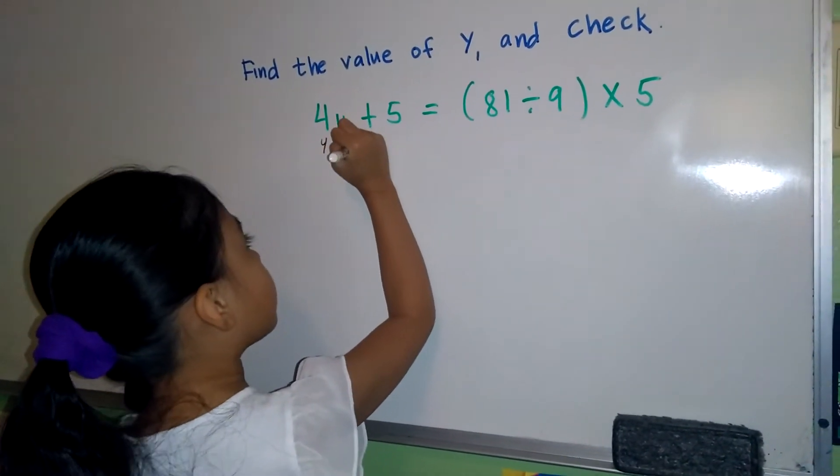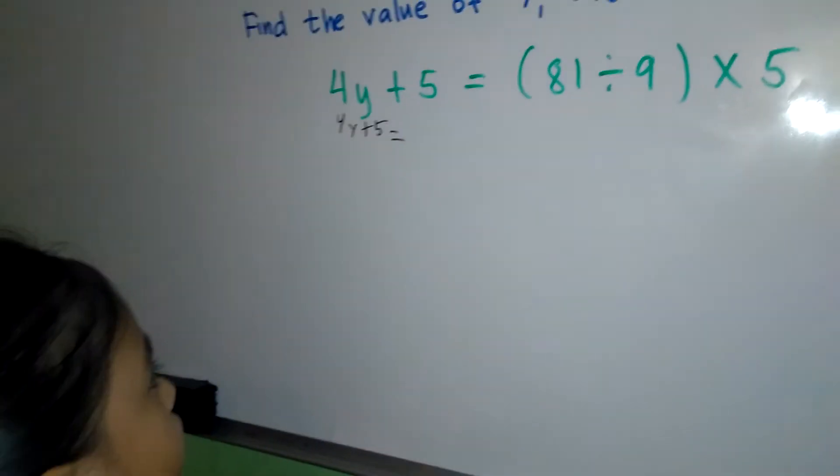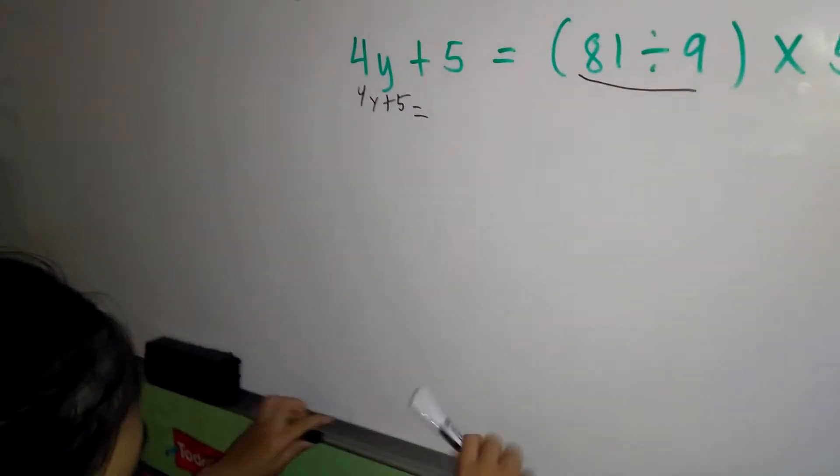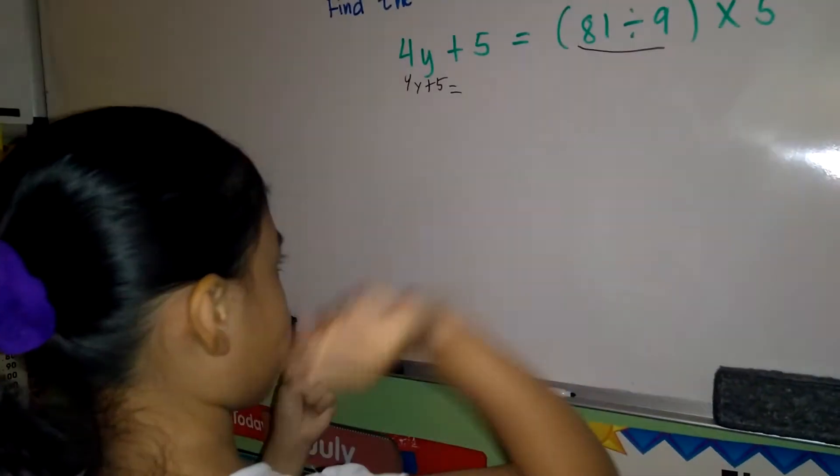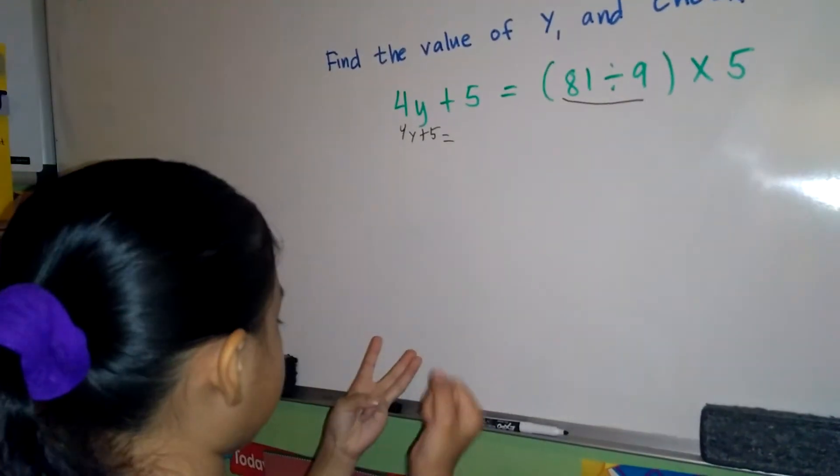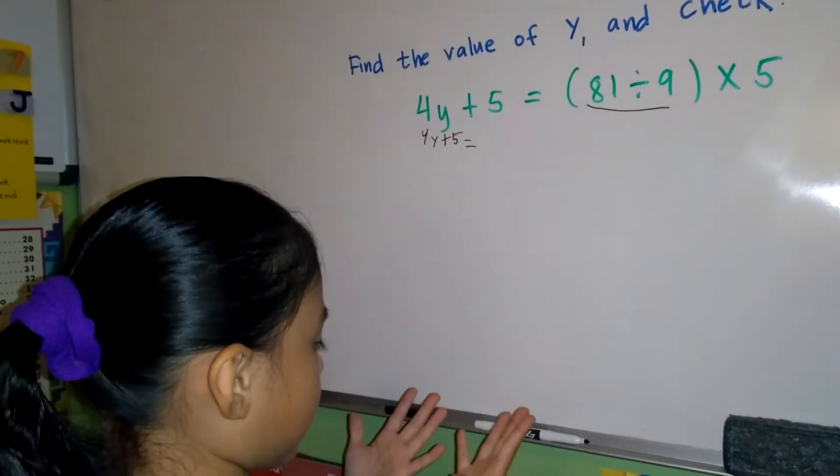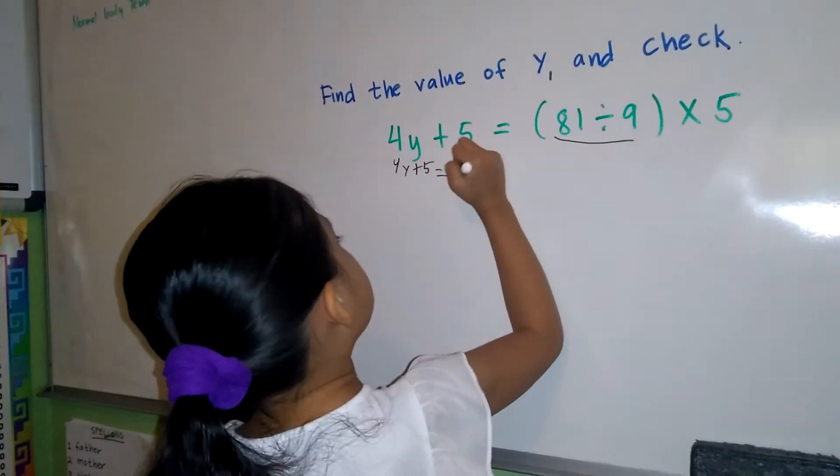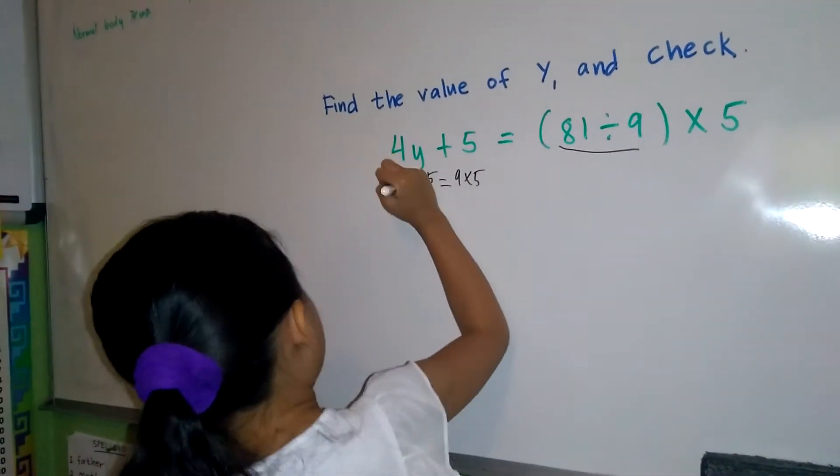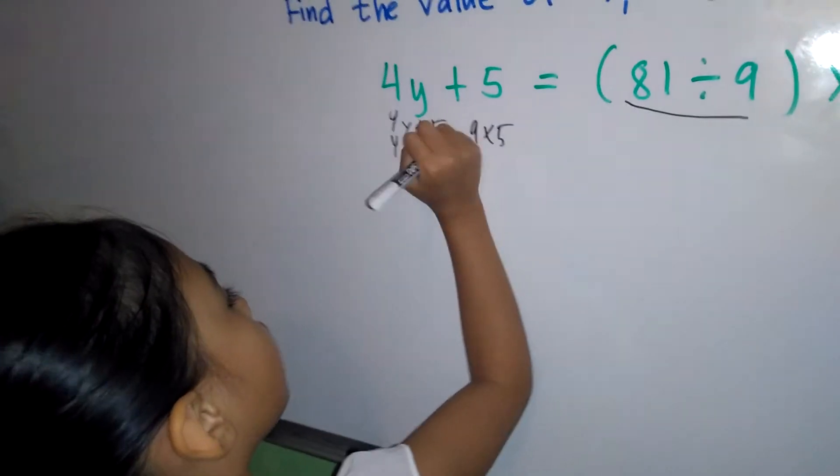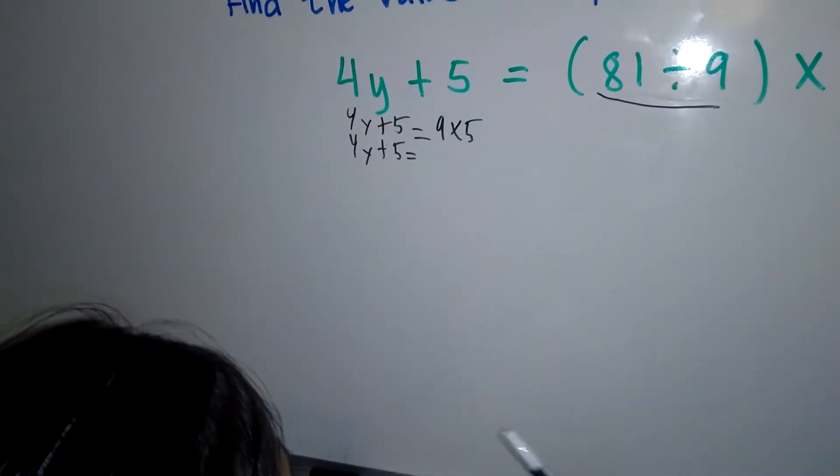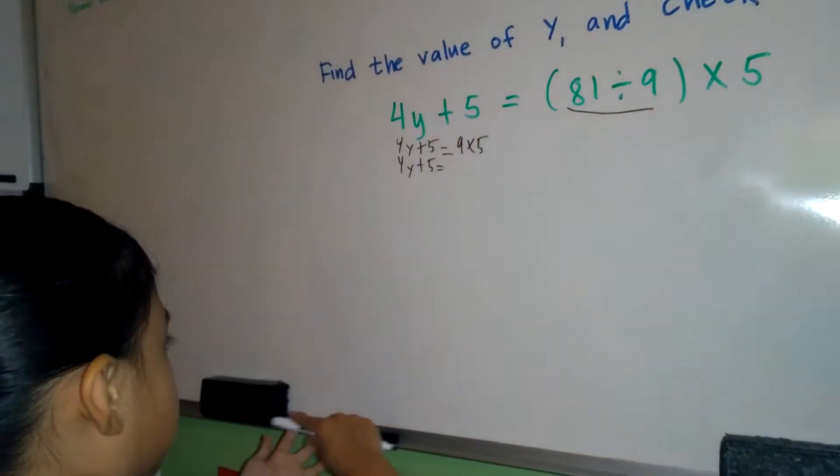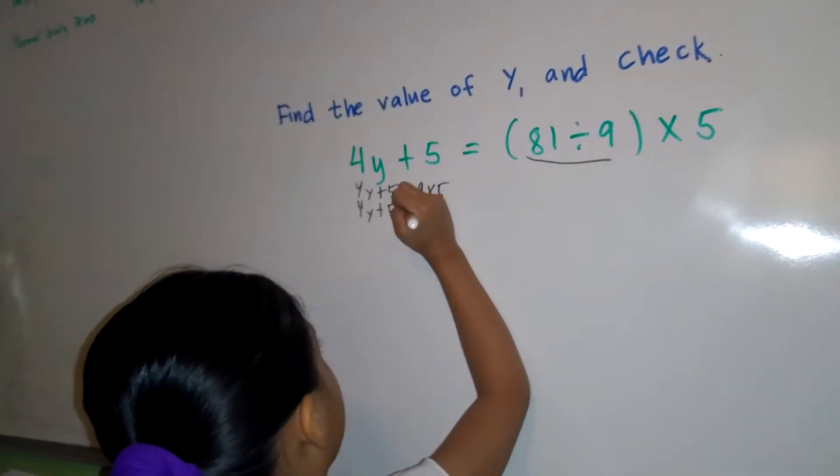4y plus 5 equals 81 divided by 9 times 5. 81 divided by 9 equals 9. 9 times 5 equals 45. So 4y plus 5 equals 45.